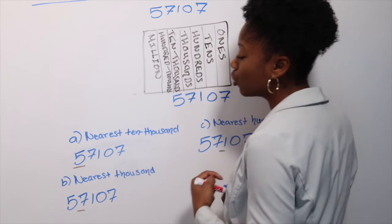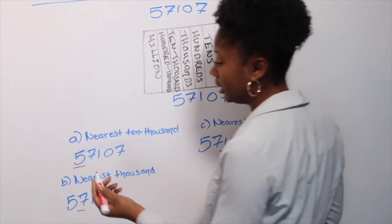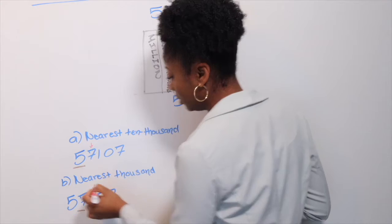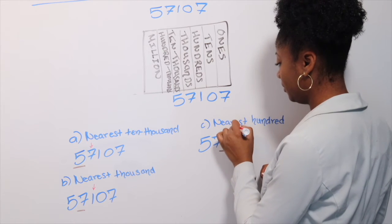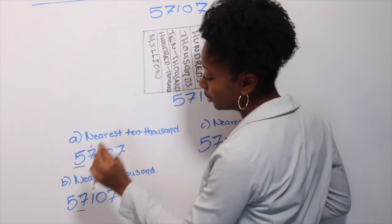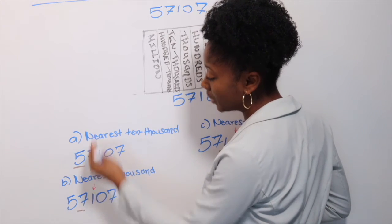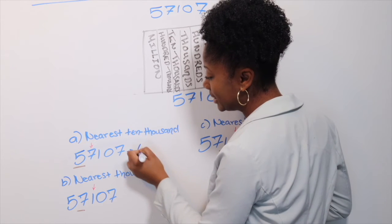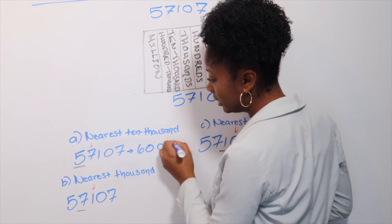So you're looking at the number that's right of it. So then this one, I'm going to put an arrow here. So the 7 is going to tell the 5 if it's moving up or staying the same because the 7 is greater than 5. The 5 is going up. So the answer will be 60,000.